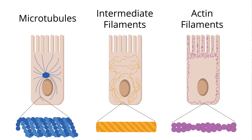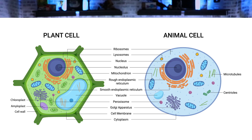Regarding cytoskeletal elements: microtubules can be involved in either internal cell motility or structure; intermediate filaments are primarily structural components of the cell; and actin filaments are often involved in cell motility or movement.